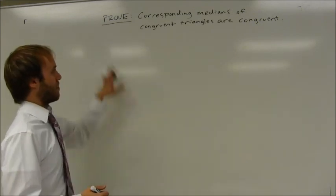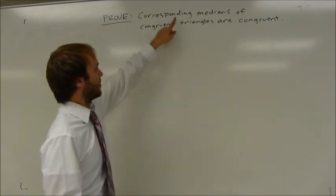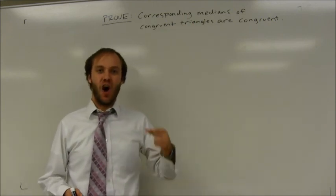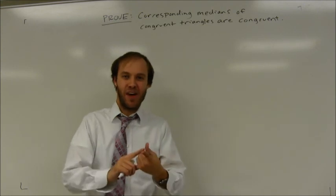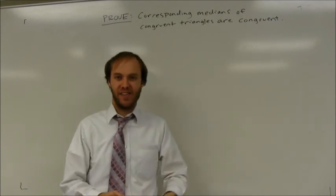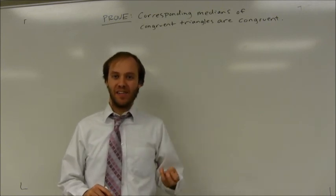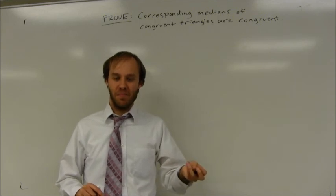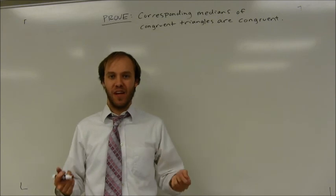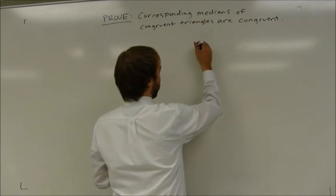So if I'm going to write my own proof, I need to provide a given, a proof, and a diagram. Notice this talks about corresponding medians of congruent triangles. So the first thing I need are congruent triangles. I'm not going to make these triangles look like they're equilateral, isosceles, or right triangles, because I want to make sure I don't make any assumptions about triangles that don't apply to certain types. So I'm going to give a generic scalene set of congruent triangles.